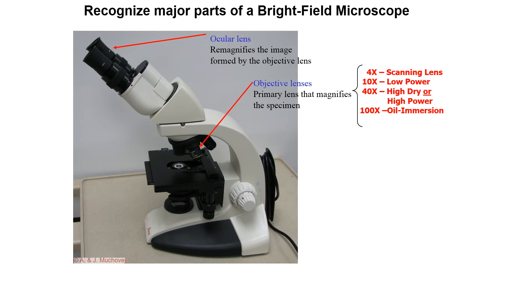When we look at the objective lenses there are normally four powers on a microscope and these include the 4x, the 10x, the 40x and the 100x oil immersion lens and they are all important.